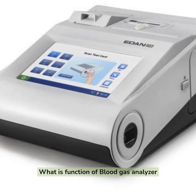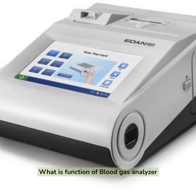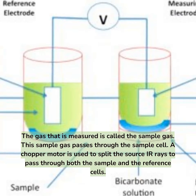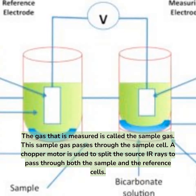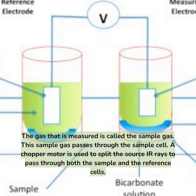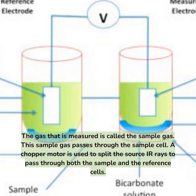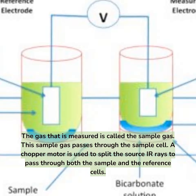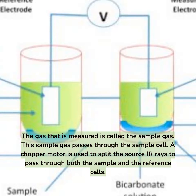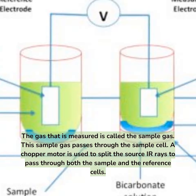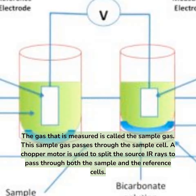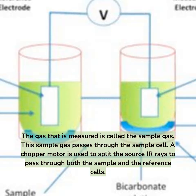What is the function of a blood gas analyzer? The gas that is measured is called the sample gas. This sample gas passes through the sample cell. A chopper motor is used to split the source IR rays to pass through both the sample and the reference cells.